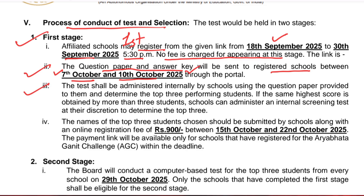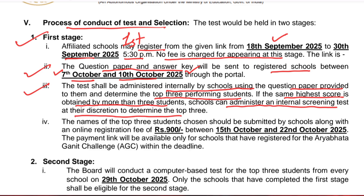The test shall be administered internally by the school using the question paper provided to them. The school will conduct the test for all students in classes 8, 9, and 10 and select the top three students. If more than three students obtain the same highest score, the school can administer an internal screening test at their discretion to determine the top three.